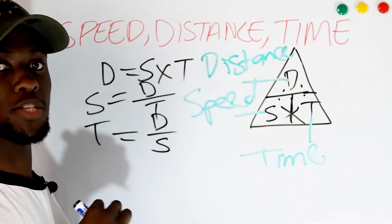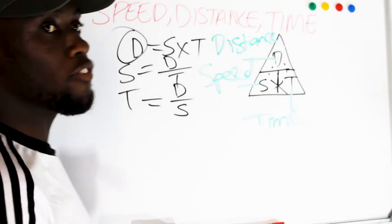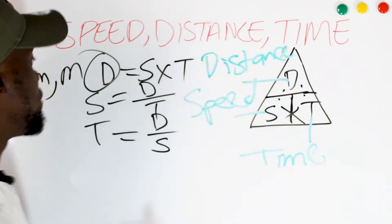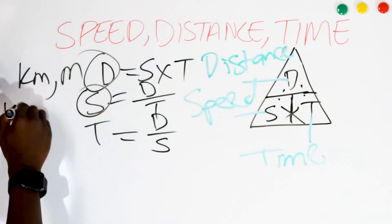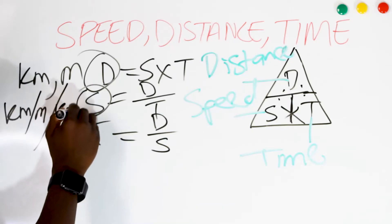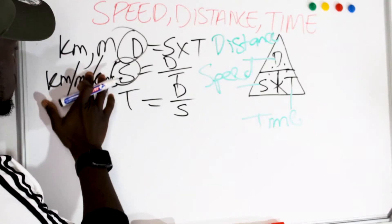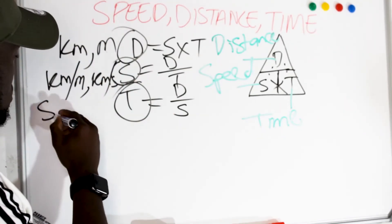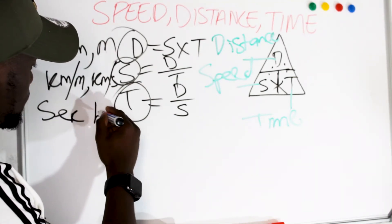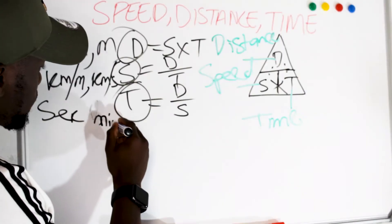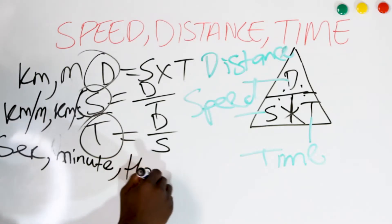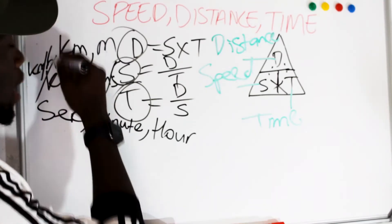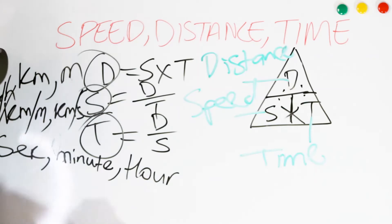Those are the formulas for speed, distance and time. For distance, the unit could be kilometers or meters. For speed, we could say kilometers per minute or kilometers per second. For time, you could say seconds, minutes or hours. Speed can also be expressed as kilometers per hour or kilometers per second or kilometers per minute.